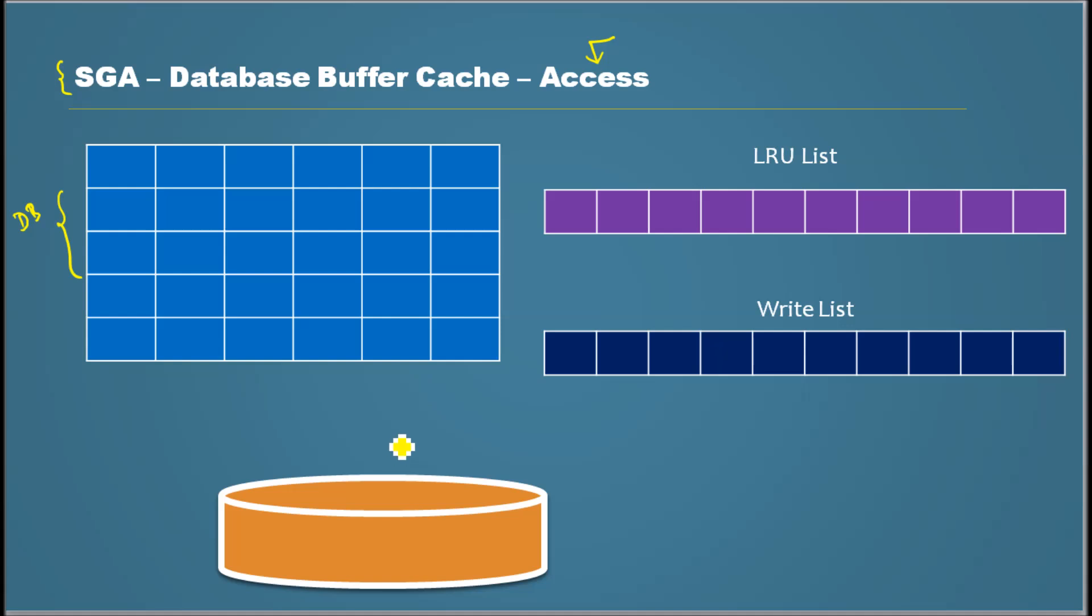Now let's see how the access to DB buffer is organized. For example, when data gets read from disk, it goes to a block in DB buffer. Let's say the data goes here.